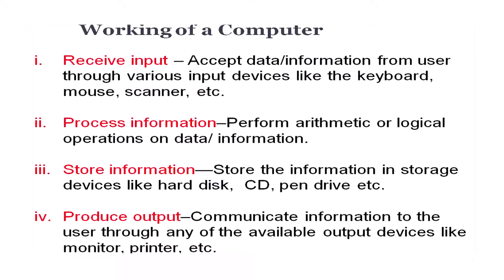In a nutshell, the working of a computer involves four steps: first, receiving input — accepting data and information from the user through input devices; second, processing that information through arithmetic and logical operations; third, storing that information in memory devices like hard disks, CDs, and pen drives; and finally, communicating the output to the user through output devices like monitors, printers, and plotters.